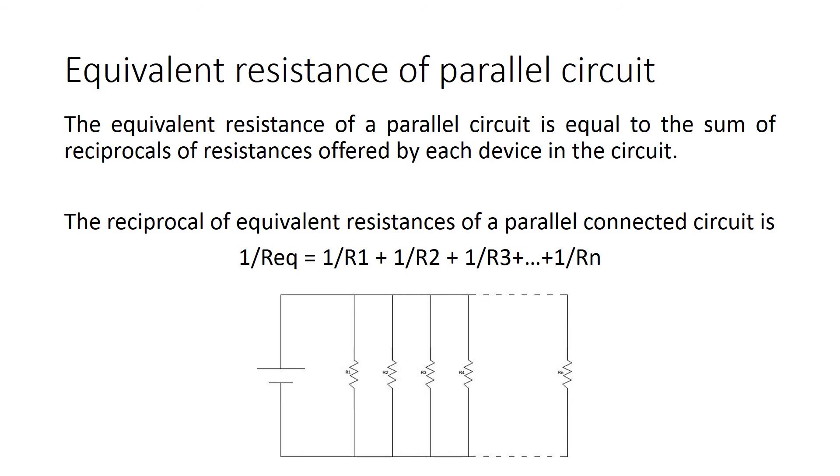Equivalent resistance of a parallel circuit. The equivalent resistance of a parallel circuit is equal to the sum of reciprocals of resistances offered by each device in the circuit. The reciprocal of equivalent resistances of a parallel connected circuit is: 1 by R-equivalent equals 1 by R1 plus 1 by R2 plus 1 by R3 plus up to 1 by Rn.